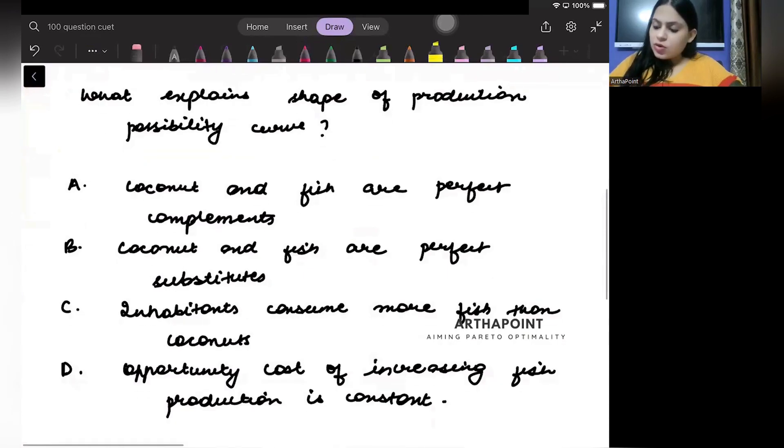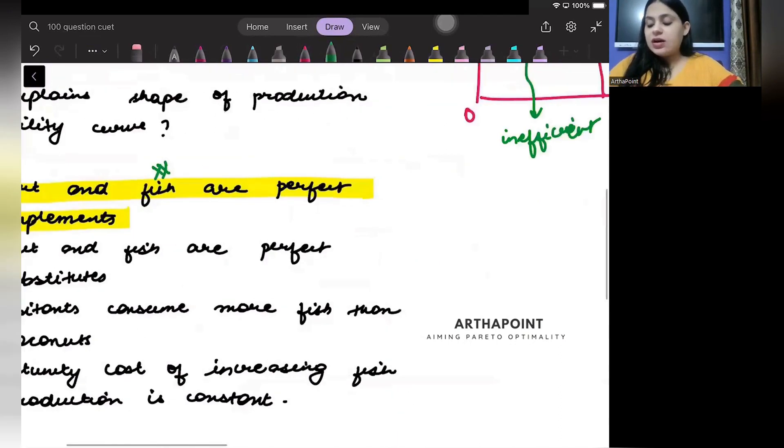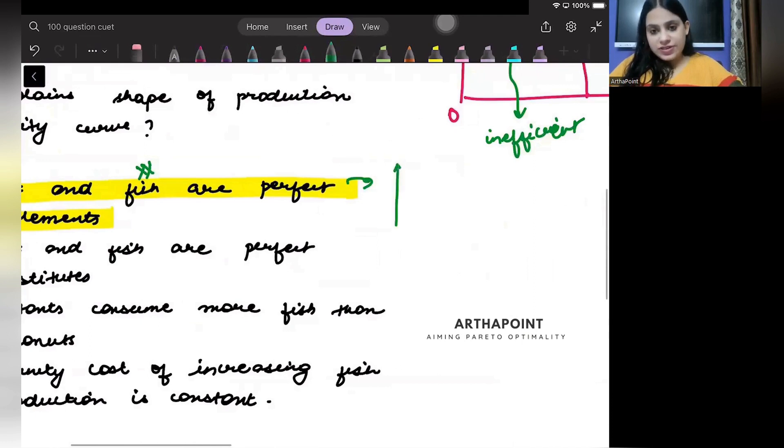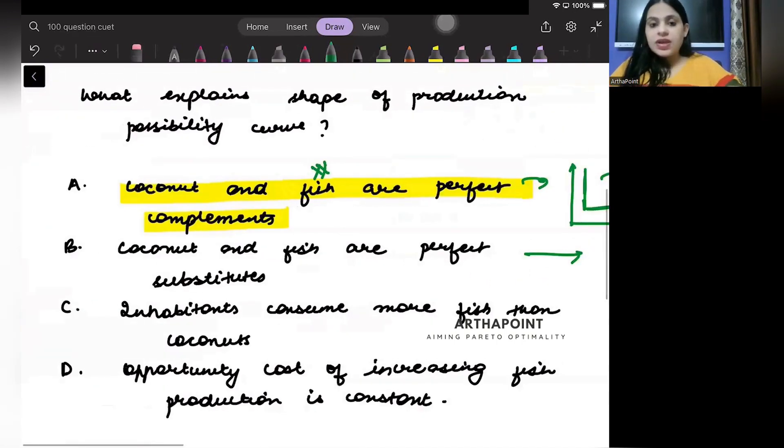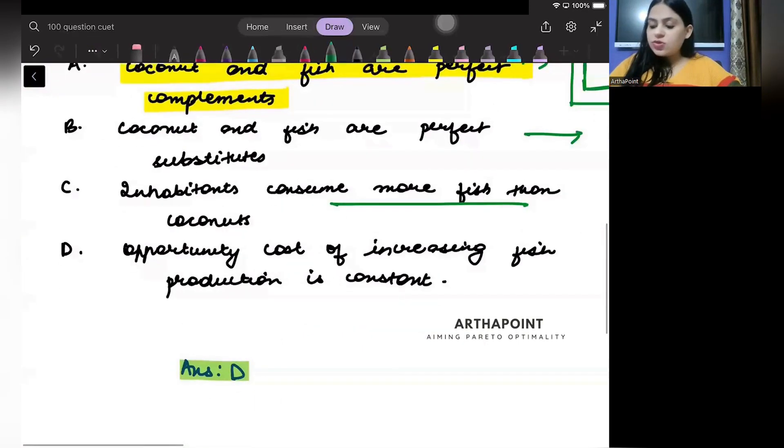So, let's read this. Coconut and fish are perfect complements? No. Complement and substitute have nothing to do with PPF. If it would have been an indifference curve, perfect complement IC is like this. Or perfect substitute indifference curve is like this. But these are ICs. These are not PPF. This is not economy as a whole. Inhabitants consume more fish than coconut. No.